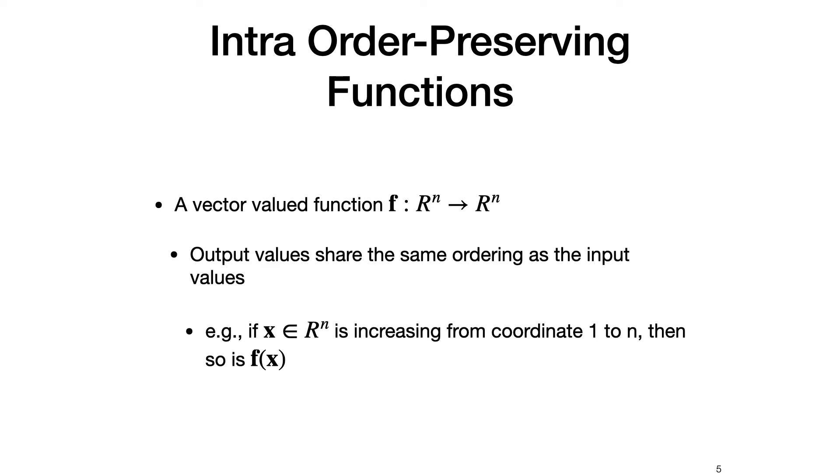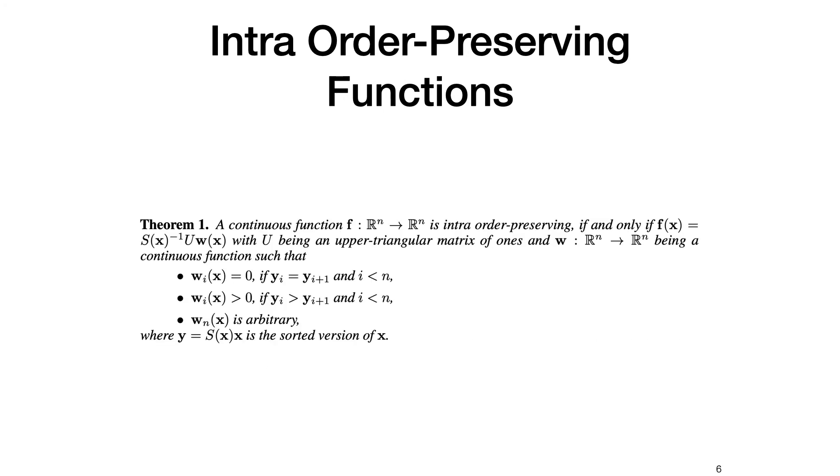We define intra-order preserving function as a vector-valued function which its output has the same ordering as the input. Any intra-order preserving function can be represented by the expression S inverse U times W, where U is an upper triangular matrix of ones, W is a positive function, and S inverse is the inverse of the sorting operation. This makes sure that the input and the output have the same ordering.